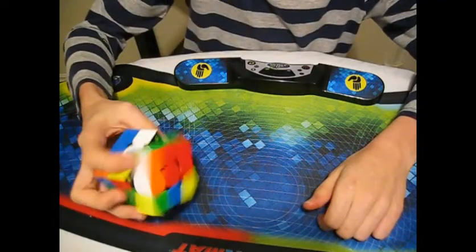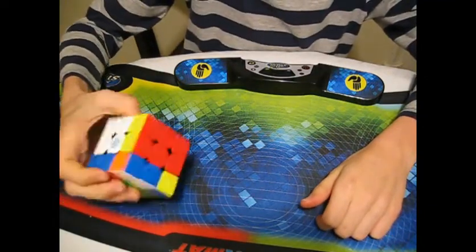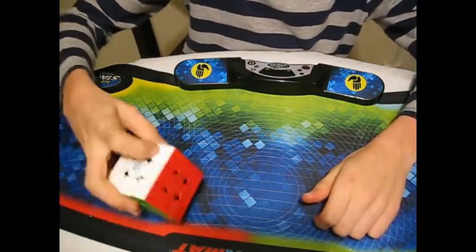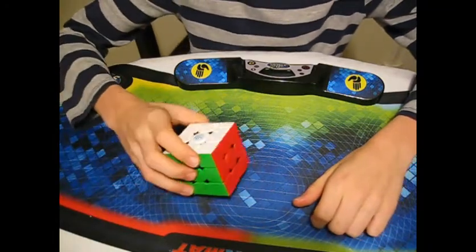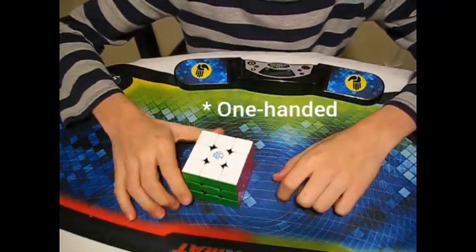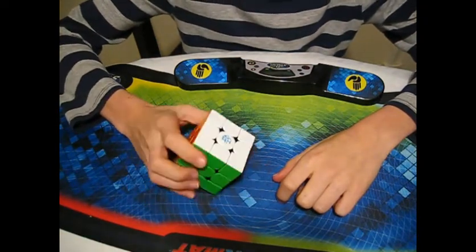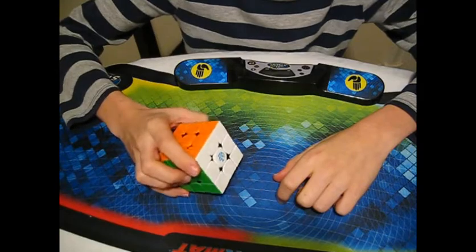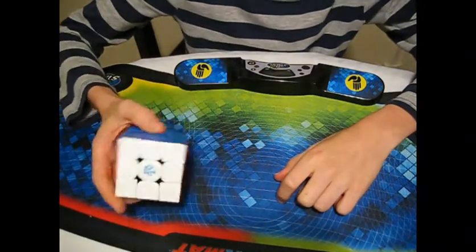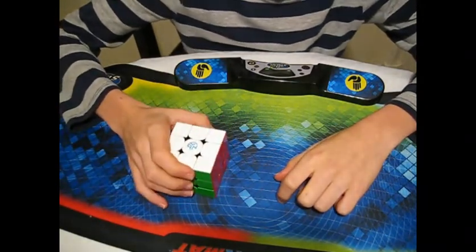For 3x3 one-handed, I use the GAN 354M because it's smaller than normal 3x3 cubes. As you can see, I'm very bad at one-handed. My goal this year is to be Sub-45 seconds and to find a better grip on the cube, because the way I hold it really hurts my pinky finger.